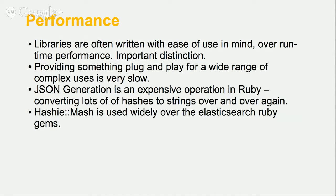A big problem with the Elasticsearch Ruby library is that it's very slick — it's very easy to drop into your application and start building with it, but it's very hard to make it work fast. The actual building of objects and using the DSL to build your query results in lots of object allocations, and then you convert that into a JSON block. Ruby's JSON support is slowly improving but it's still quite slow. The real hot spot is a class called Hashimash, which converts a dictionary to a usable object. The Elasticsearch Ruby library is very good for building initially, but it becomes quite hard to scale.